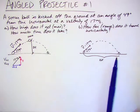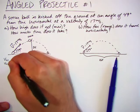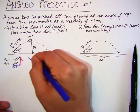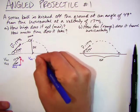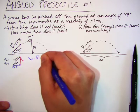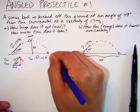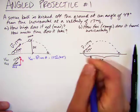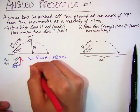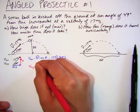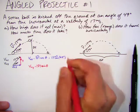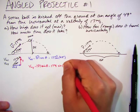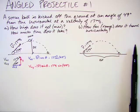I know that v0x is going to be whatever v is, the magnitude of v times the cosine of theta, which in this case is 17 cosine of 49 degrees meters per second. And v0y is going to be the magnitude of v sine of theta, which is 17 meters per second sine of 49 degrees.